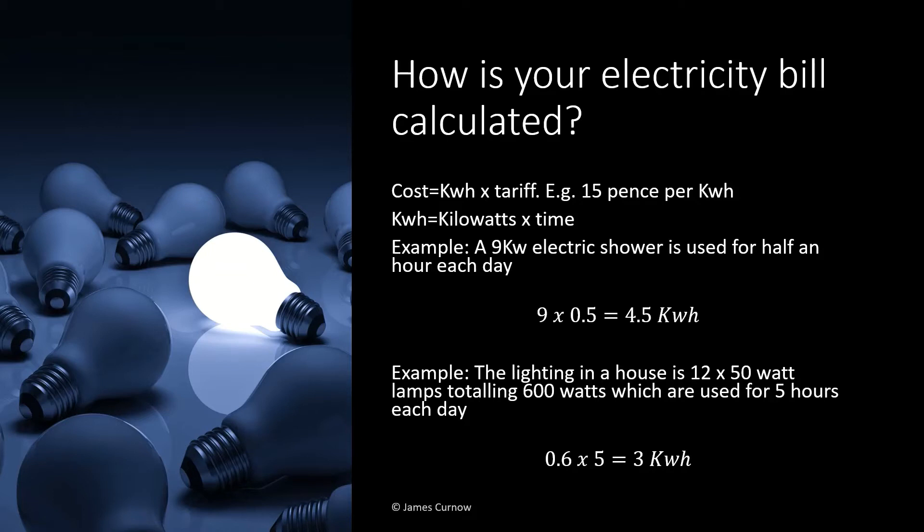A kilowatt hour is kilowatts used multiplied by time. So for example, a 9 kilowatt shower that is used for half an hour per day — this can be calculated by multiplying 9 by 0.5, which comes to 4.5 kilowatt hours.